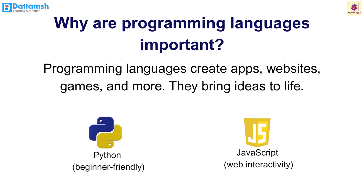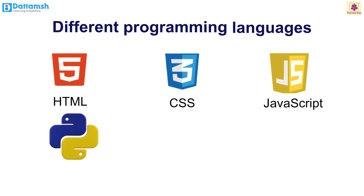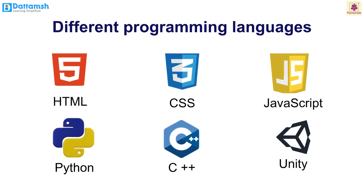Why are programming languages important? They are important because programming languages create apps, websites, games, and more — they bring ideas to life. Examples: Python is a beginner-friendly programming language; JavaScript is a programming language that is good for web interactivity. Different programming languages exist for various purposes, and we will learn a little bit about them later in this lesson.